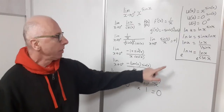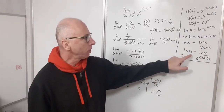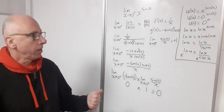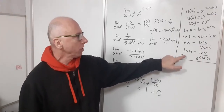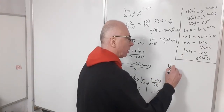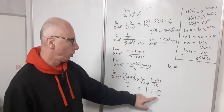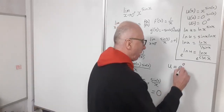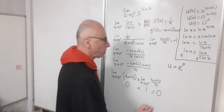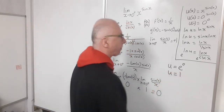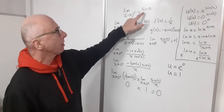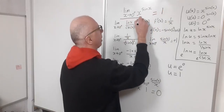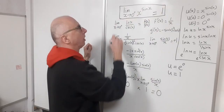So the limit of ln(u) equals zero. Now exponentiating both sides: e^(ln u) = e^0. The left side simplifies to u, and e^0 = 1, so u = 1. Therefore the limit as x approaches zero from the positive side of x^(sin x) equals one. That's our answer.